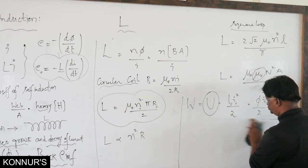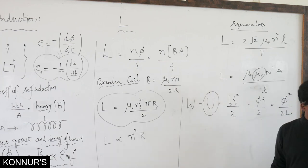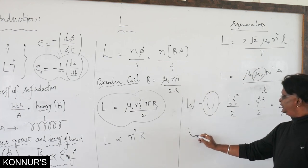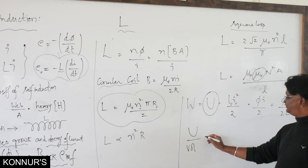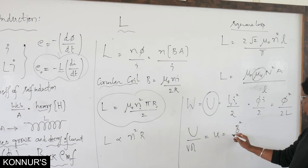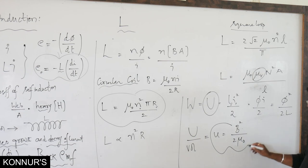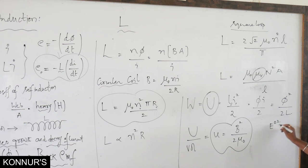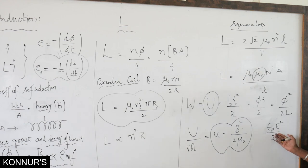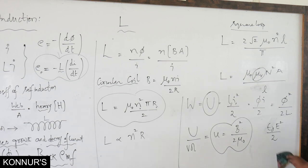Energy density in a magnetic field: u = B²/2μ₀. This is analogous to the electric field energy density u = ε₀E²/2 for a capacitor. These expressions are important and must be remembered.